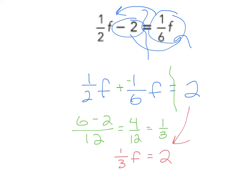Next step. So how do we undo multiplying by 1 third? We multiply by the reciprocal, which is 3 over 1. And we'll do it to both sides. So these cancel. And we're left with f equals. So 2 times 3 is 6. 6 over 1 is just 6. f would equal 6.